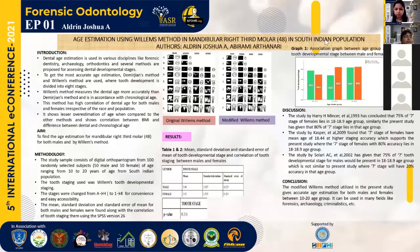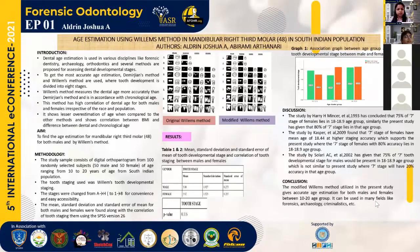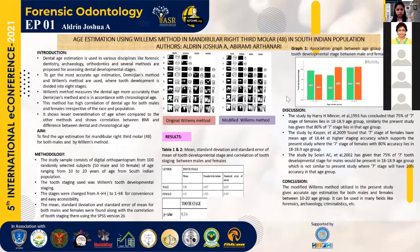For convenience, I changed the A-to-H tooth development stage notation to 1-to-8 for easy accessibility. The mean and standard deviation for both males and females were found along with the correlation of tooth staging using SPSS version 26. I displayed the original Williams method and the modified Williams method. From the SPSS results, for males the tooth development stage showed a mean of 5.8 and for females it was 5.9. The standard deviation was 1.9 for males and 1.23 for females. The standard error of the mean was approximately 0.2 for both, which is very negligible, so this method seems promising.